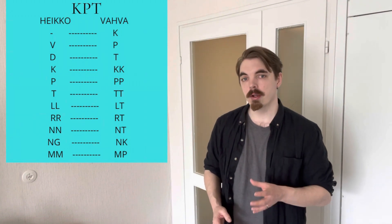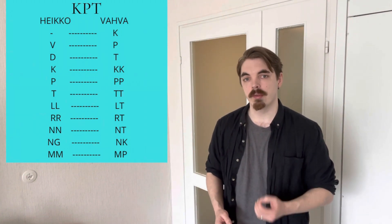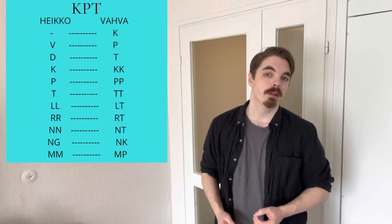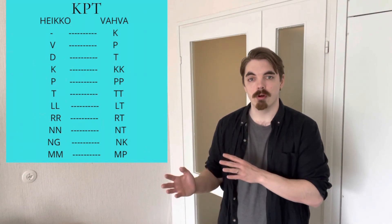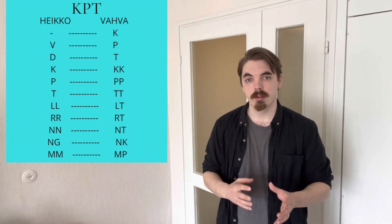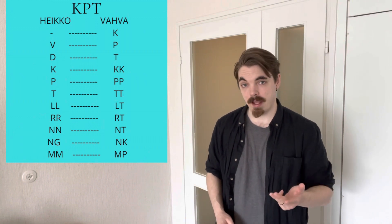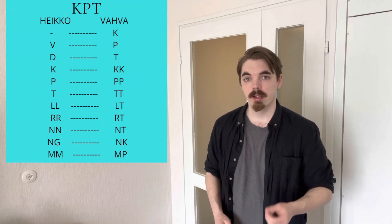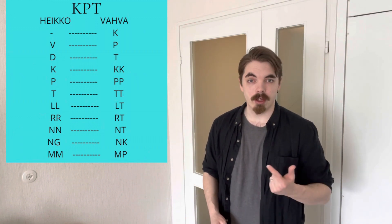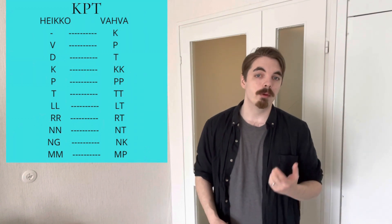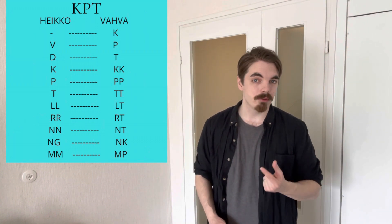Today we're going to look at verbs and how we conjugate them in the present tense. In verb type 1, the rule is to go from strong to weak for the MINÄ, SINÄ, ME, and TE forms. HAN and HE — the third person singular and plural — remain strong, so we don't change those.